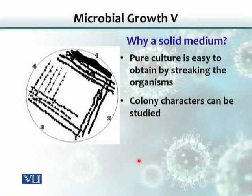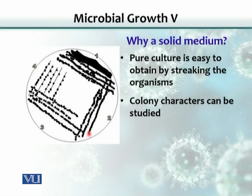We use a platinum loop — an inoculum tool used here the first time from the source of the sample. We touch our inoculum here and then sterilize the loop, which is used for transferring bacteria from one place to another. After sterilization, we make various lines. Then we reach the end, sterilize the loop again, cool it down, and make other lines touching from the last line. This keeps dragging fewer bacteria onto each successive line, spreading them further and further out.